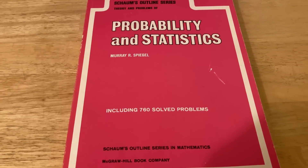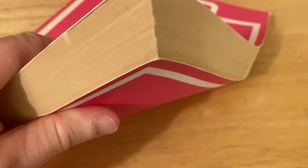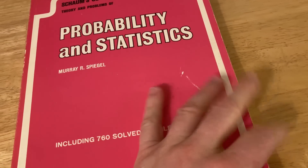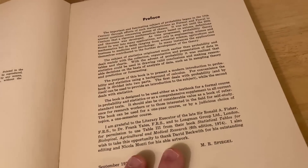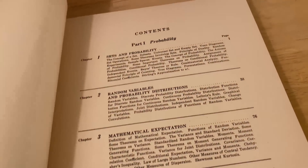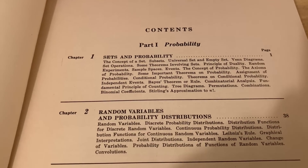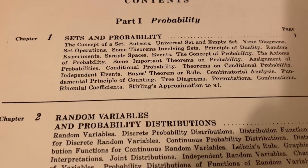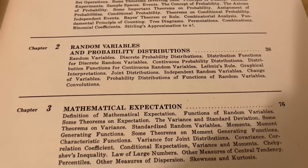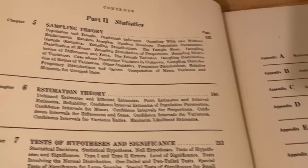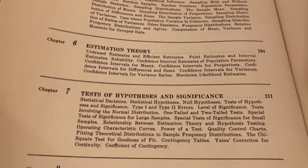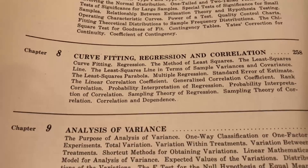Here we have the Schaum's Outline on Probability and Statistics, and this is one of the thicker Schaum's outlines — super thick. One downside to older versions is that the pages are very, very delicate and will break very easily, so keep that in mind. Topics include sets and probability, random variables and probability distributions, mathematical expectation, special probability distributions, sampling theory, estimation theory, tests of hypothesis and significance, curve fitting, regression and correlation, and analysis of variance. This is a really good one — I've done some problems from this one.